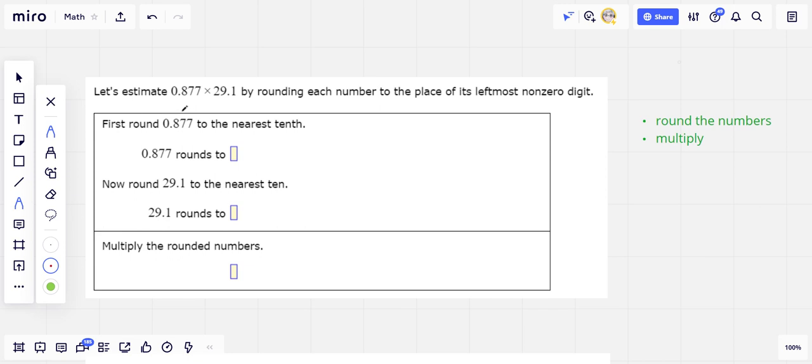So this problem says, let's estimate 0.877 times 29.1 by rounding each number to the place of its leftmost non-zero digit. What does that mean, the place of its leftmost non-zero digit? So ignoring the zeros on the left,